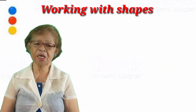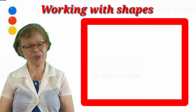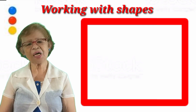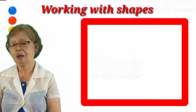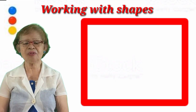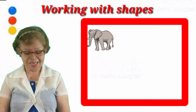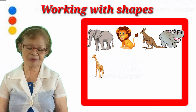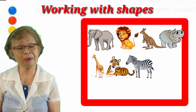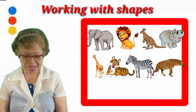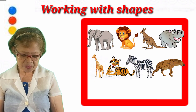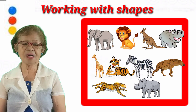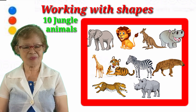Now the last shape we're going to work with is the square. You know what a square is — four sides that are equal. We're going to make a square and put all the jungle animals inside: elephant, lion, kangaroo, hippo, giraffe, tiger, zebra, hyena, cheetah, and rhino. So how many jungle animals did we put in the square? Ten jungle animals. So we finish our working with shapes.